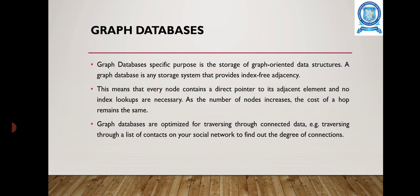Graph databases have a specific purpose: to store graph-oriented data structures. Every node contains a direct pointer to its adjacent element, so no index lookups are necessary. As the number of nodes increases, the cost of traversal remains the same. Graph databases are optimized for traversing through connected data — for example, traversing through a list of contacts on a social network to find the degree of connections.